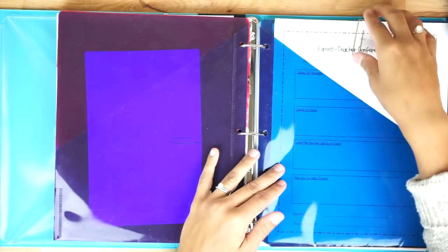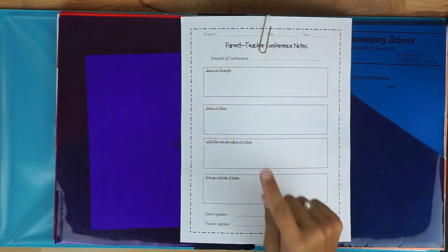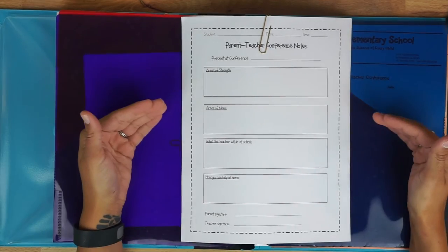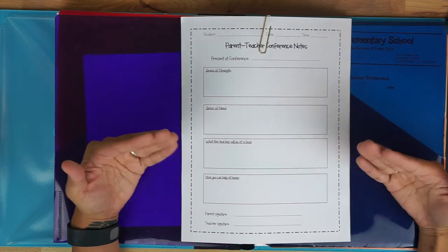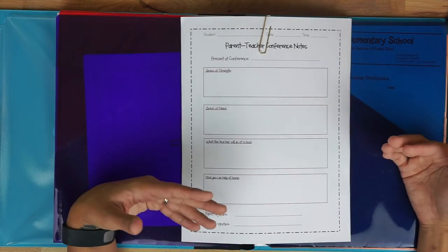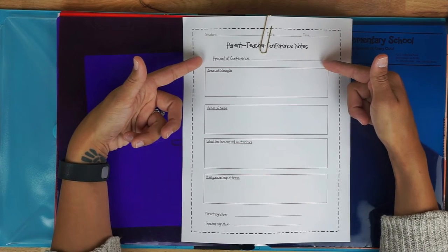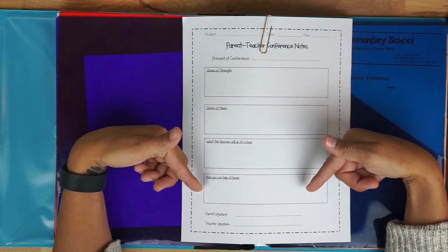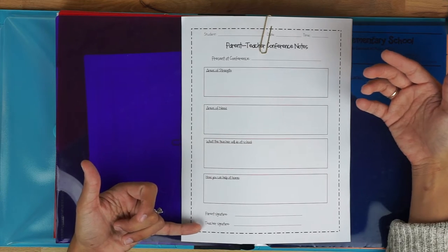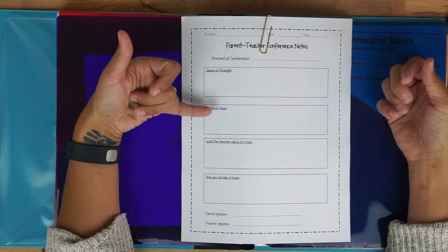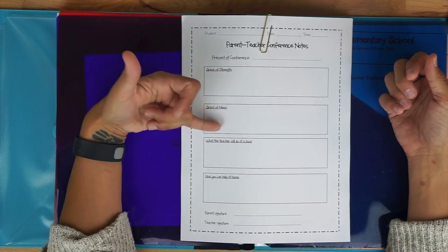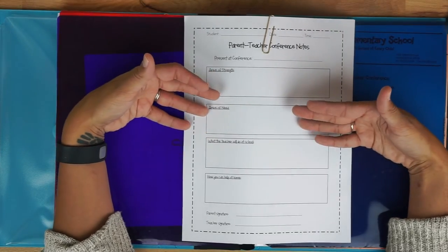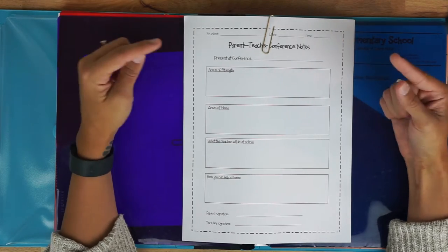So during the conference we have to keep notes. Now this one I've had and I don't use this one anymore because my school has decided to start providing the conference form that we fill out during the conference but this is pretty much exactly what that one is. It tells me who's present at the conference, the areas of strength, need, what will the teacher do at school and then how can you help at home and then it has a signature and then the teacher signature here. And I usually try to list about three to four in each of these two sections here so I'll list three to four areas for strength and for need.